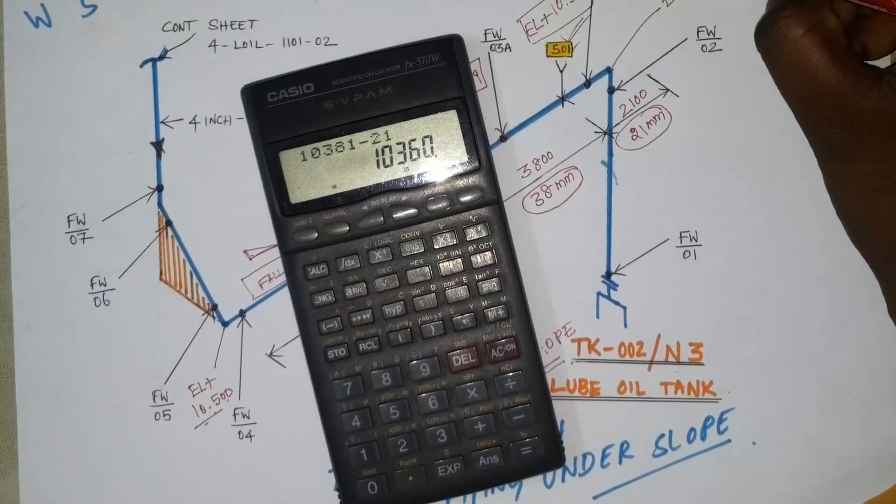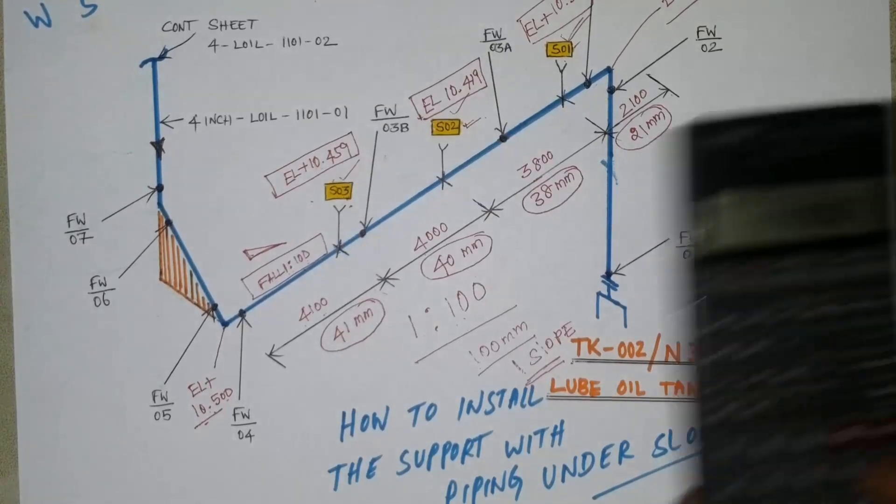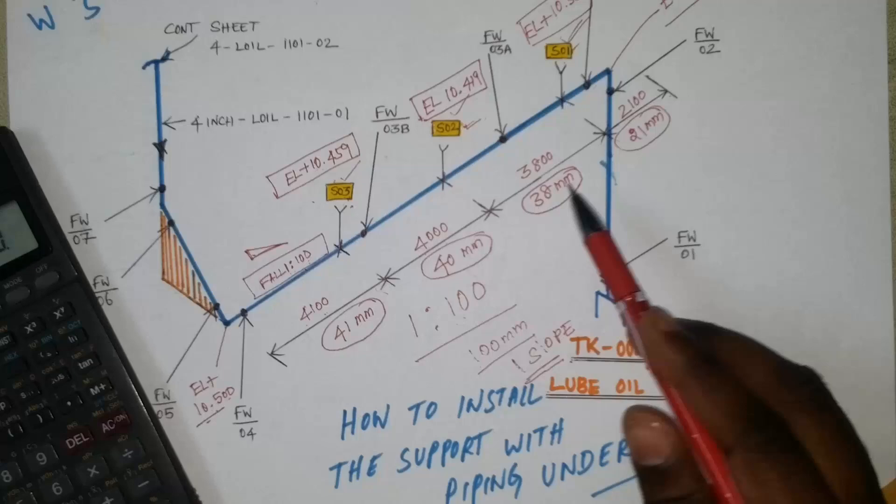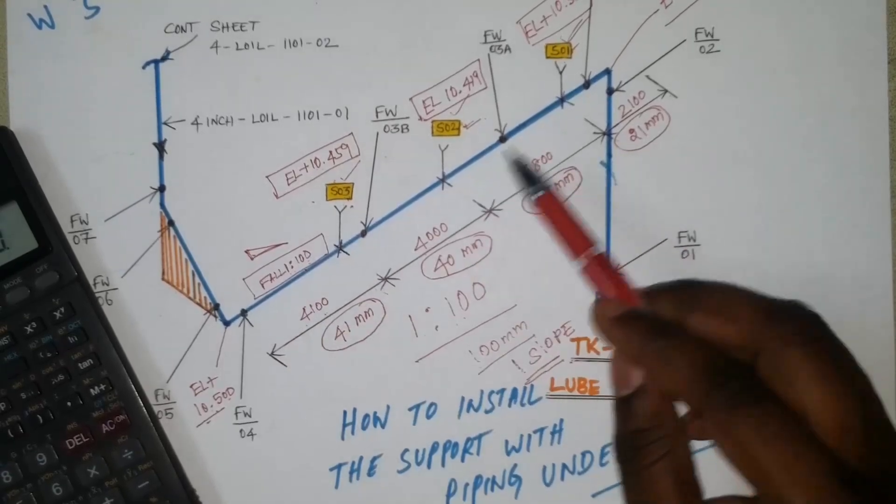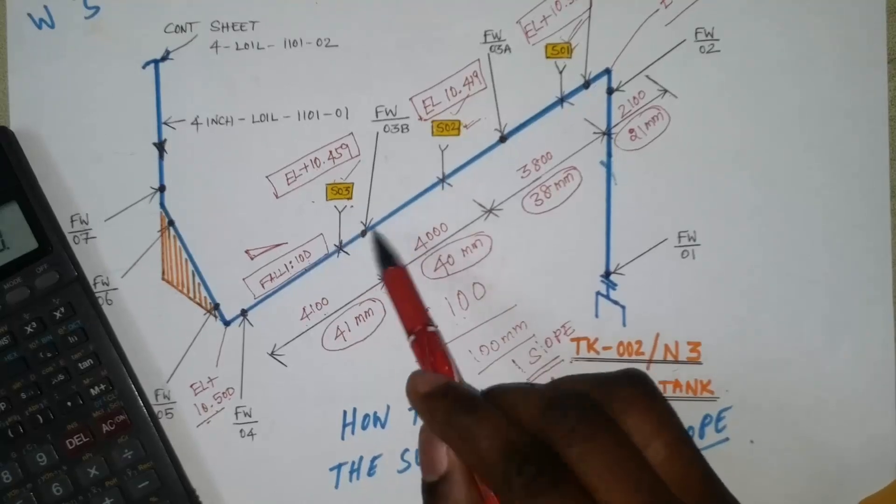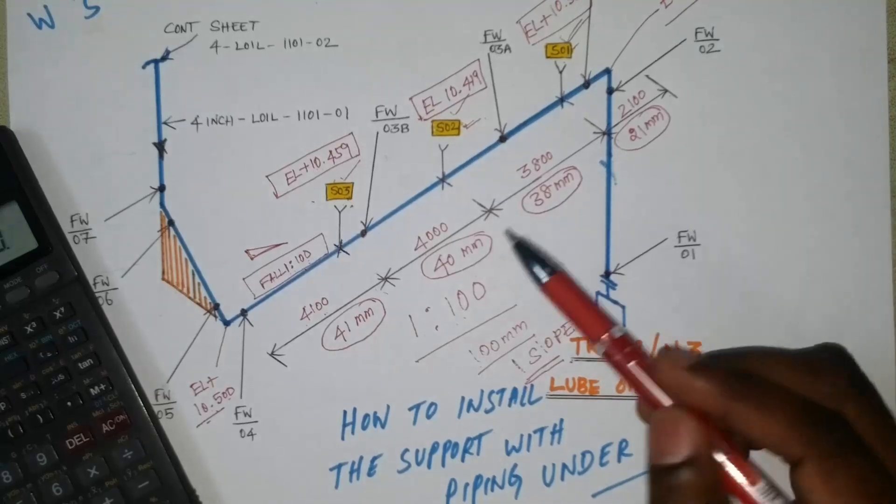Like that you have to install the support. In case the pipeline has slope, you have to calculate support elevation like that. Then by using water level, level tube like that, from the starting point you have to mark that support center.